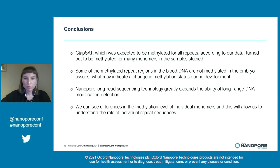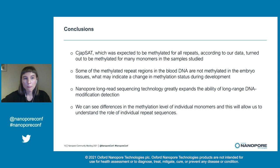CGAP set, which was expected to be methylated for repeats, turned out to be unmethylated for many monomers according to our data. In addition, we found a difference in the methylation pattern between erythrocyte and embryo samples during the analysis. It should be noted that some of the methylated repeat regions in the blood DNA are not methylated in the embryo, which may indicate a change in methylation status during development. Nanopore long-range sequencing technology greatly expands the ability of long-range DNA modification detection, and we can see differences in the methylation level of individual monomers, allowing us to understand the role of individual repeat sequences.